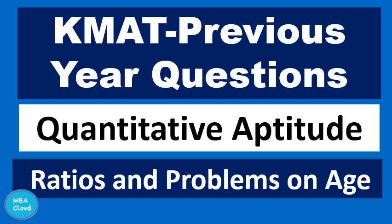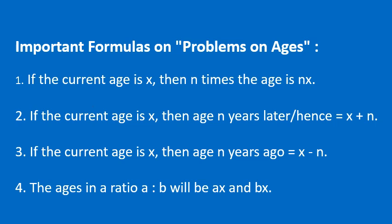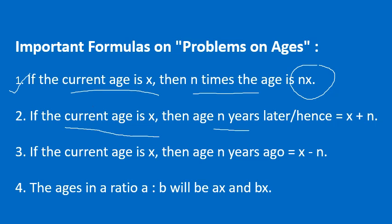We will talk about age-related problems. If the current age is x, then n times age is 2 times. If the current age is x, then we will write this problem. These are the n basic age problems.